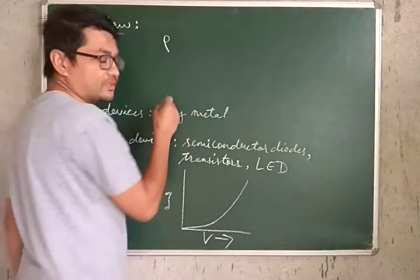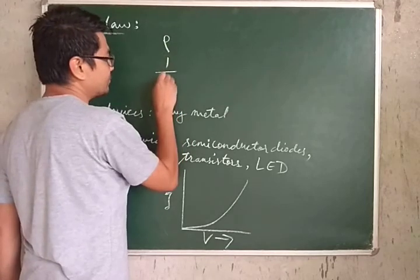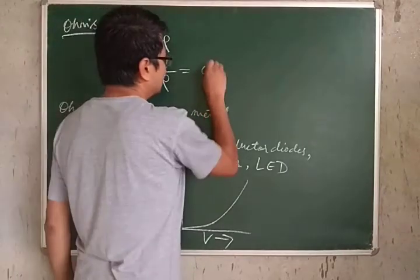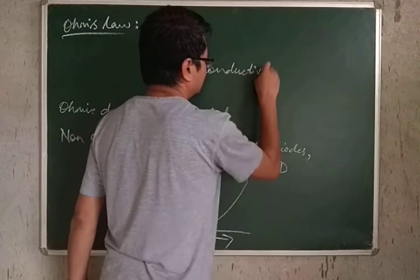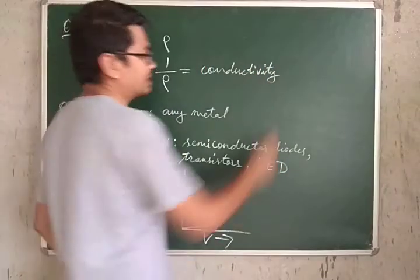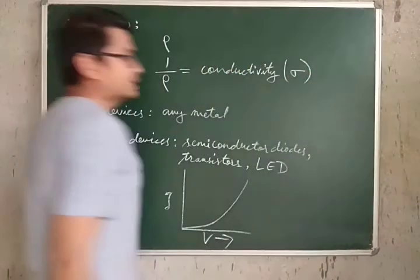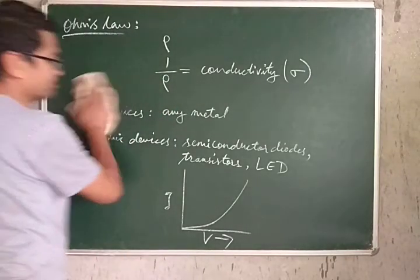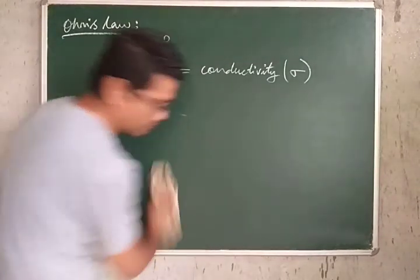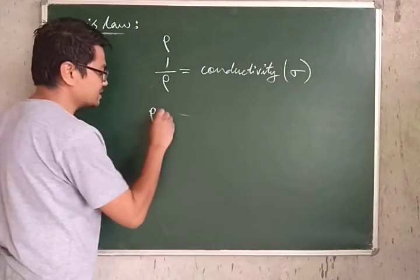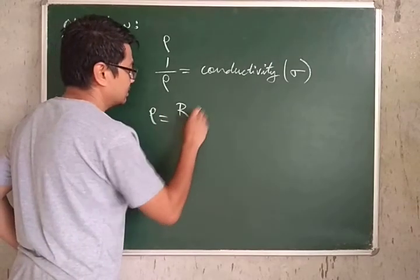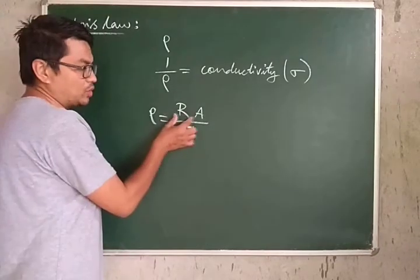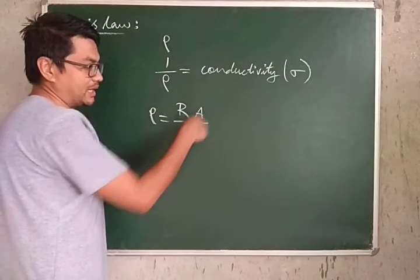The inverse or reciprocal of resistivity is called conductivity, denoted by the Greek letter sigma. Since the unit of resistivity is ohm meter — derived from resistance times area divided by length: ohm × meter² / meter — the unit of conductivity is ohm inverse meter inverse.